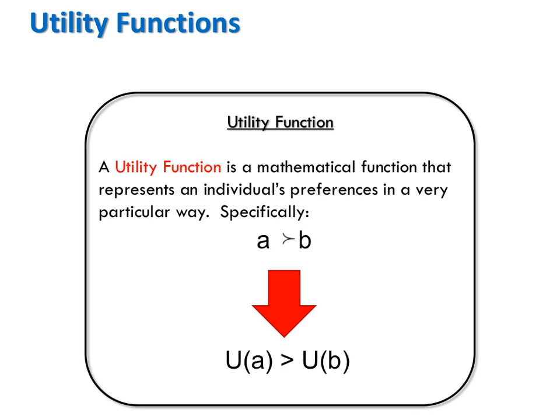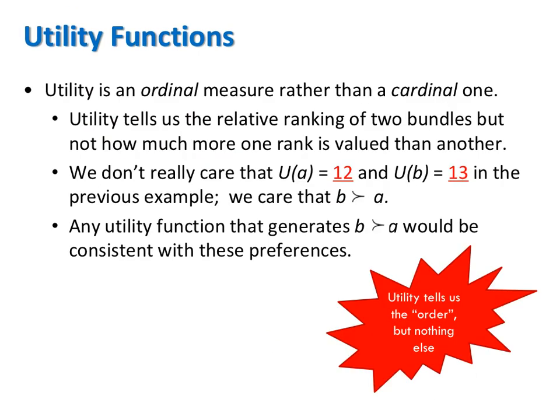In the same way, if A is strictly preferred to B, it must follow that the utils from A are greater than the utils from B. In this way, utility is an ordinal measure rather than a cardinal one. That is, utility tells us the relative ranking of two bundles, but not how much more one rank is valued than the other.